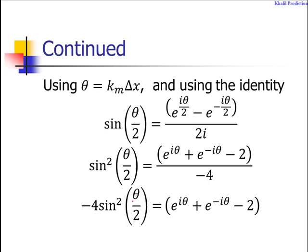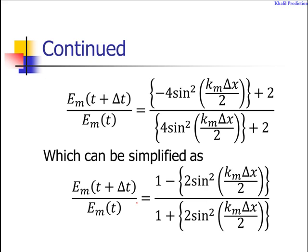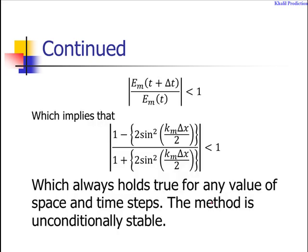The error amplification factor e_m(t + Δt) divided by e_m(t) is equivalent to [1 minus 2 sin²(k_m Δx/2)] divided by [1 plus 2 sin²(k_m Δx/2)]. For stability, this quantity must be less than 1.